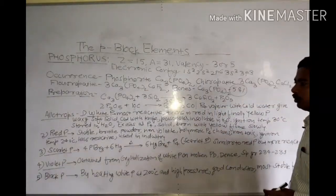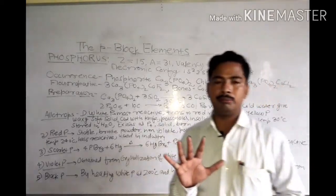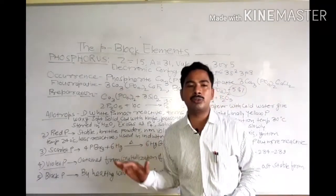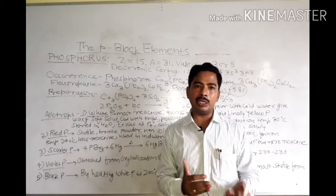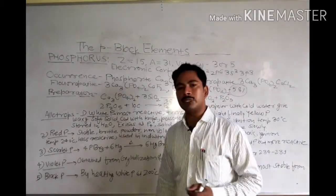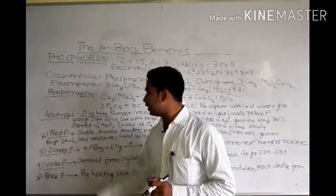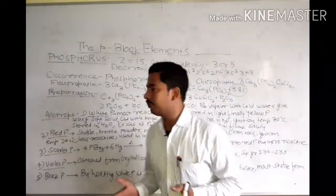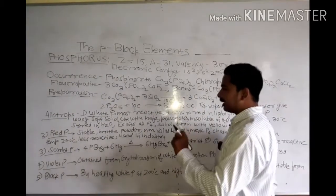The next point is allotropes. In allotropes there are a total of 5 allotropes. The first two are most common and more frequently used. The five are: white phosphorus, red phosphorus, scarlet phosphorus, violet phosphorus, and black phosphorus.